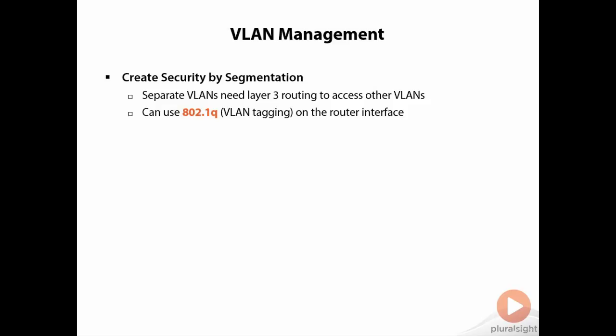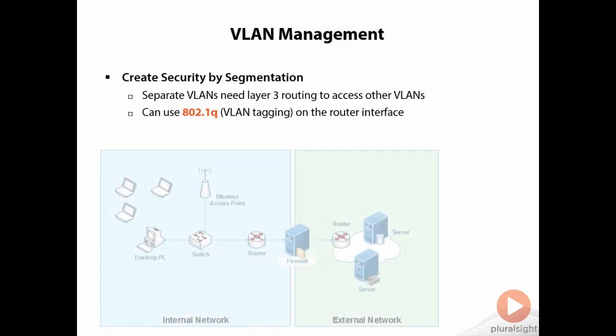It's just like if we had physical LANs — one network cannot contact another network unless there's a router in between. What we can use is something called 802.1Q, or VLAN tagging, on the router interface or the switch interfaces. So we don't necessarily have to have physical interfaces on the routers themselves.